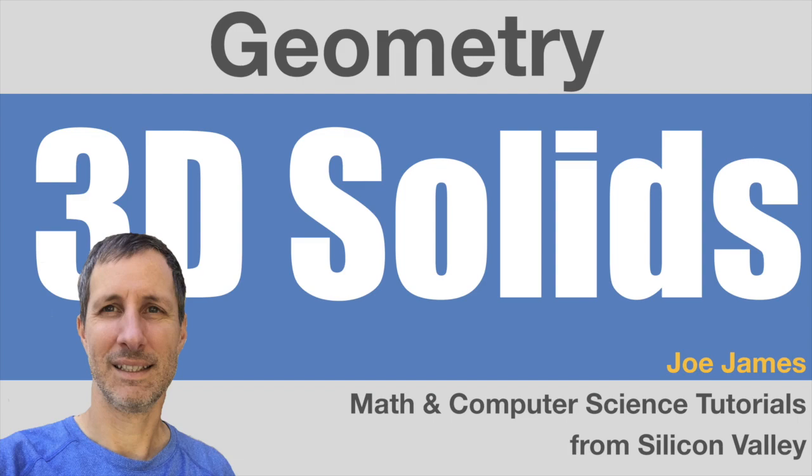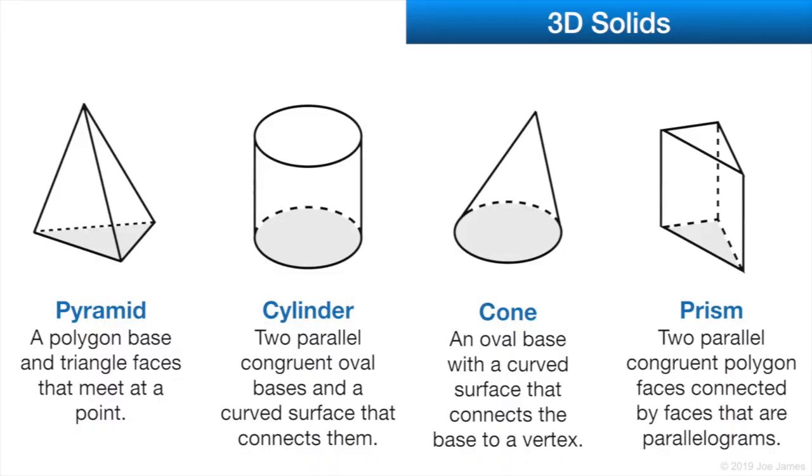Hi, I'm Joe James, and in this video in our geometry series we're going to cover 3D solids. These are the four 3D solids we're going to cover: pyramids, cylinders, cones, and prisms.